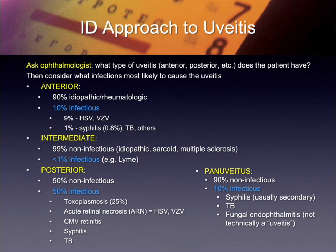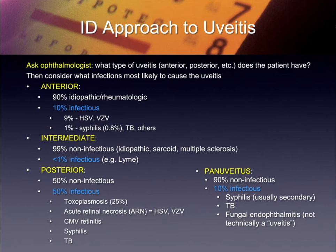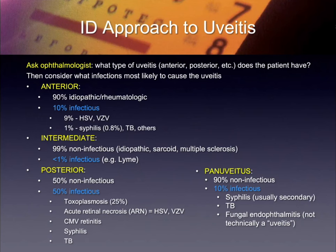You have to tell me what area of the eye is most involved. If it's a pan-uveitis, 10% are infectious — it's either going to be secondary syphilis, usually TB, or a fungal endophthalmitis. If you're looking anteriorly, about 10% are infectious — most of that's going to be either HSV or VZV. About 1% may be syphilis out of that, rarely TB, and a scattering of other things.